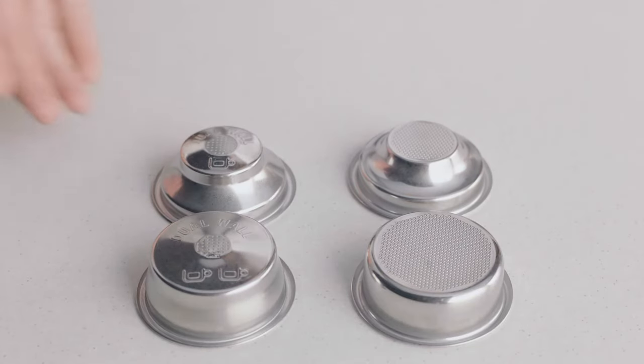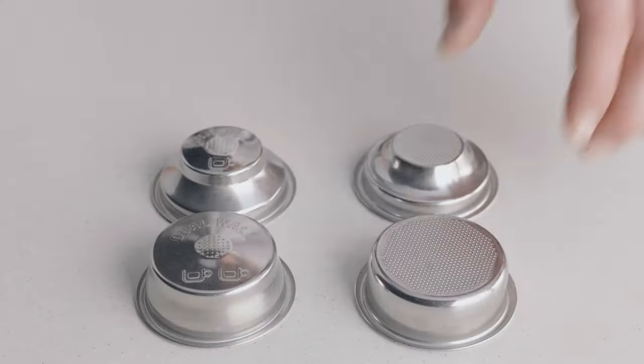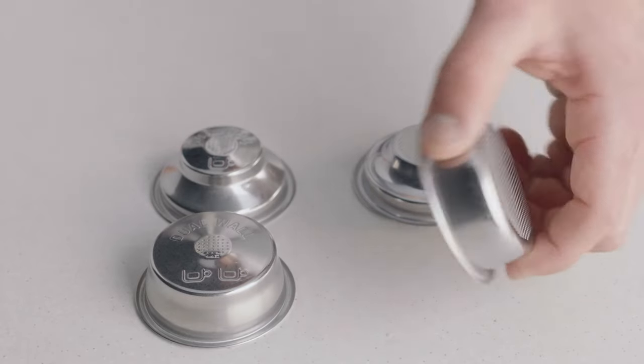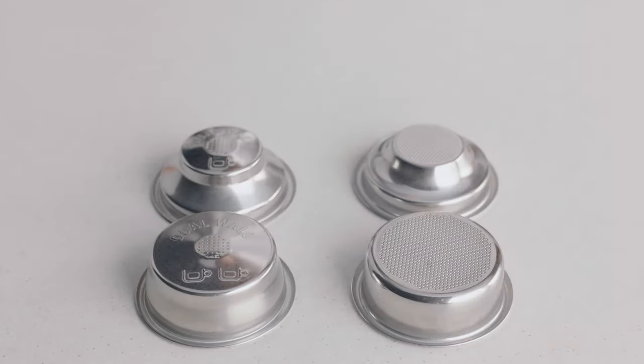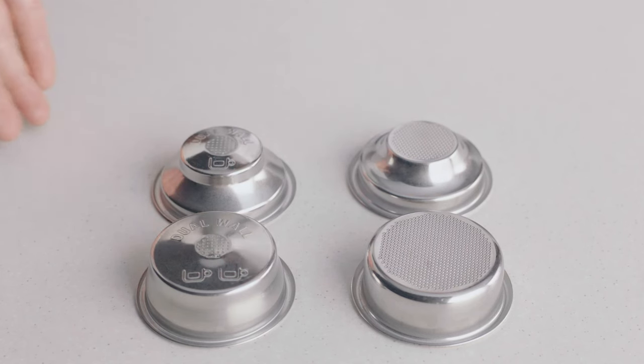You might have noticed there are also single and dual wall filter baskets with your machine. When your coffee beans are at their peak of five to thirty days out of roast, use the single wall filter basket. But if they're older than 30 days or the bag has a best before or used by date, use the dual wall filter basket.